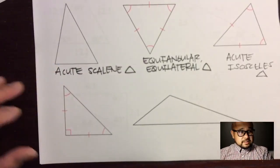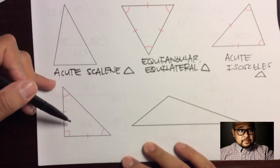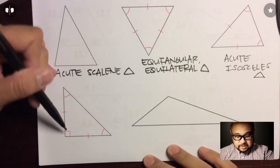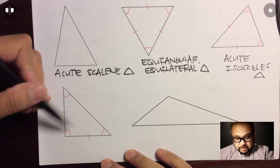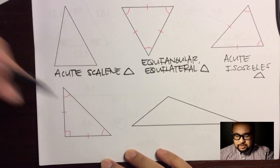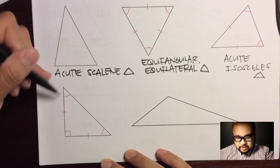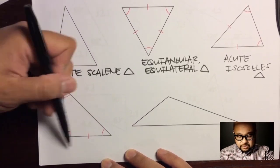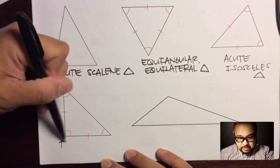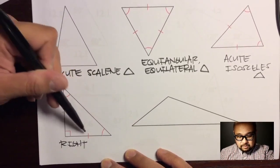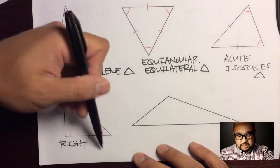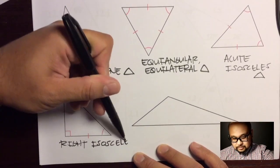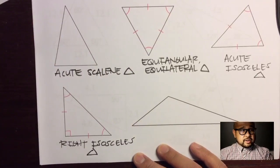For this triangle, there's a small square in the corner, meaning these two sides are perpendicular, forming a 90-degree angle. So this is a right triangle. There are matching tick marks on two sides, making it a right isosceles triangle.